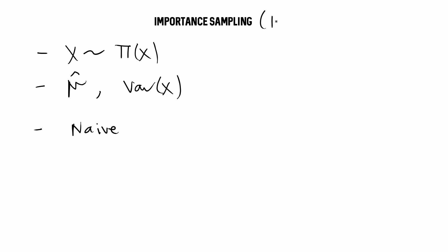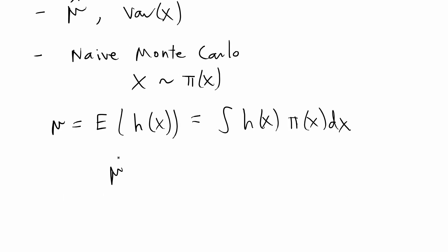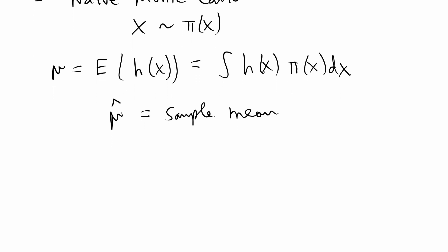Importance sampling, sometimes abbreviated IS, is a simple extension of the idea of naive Monte Carlo. The idea with naive Monte Carlo is that x, your random variable, is distributed pi(x) where pi(x) is some target distribution. If you wanted to estimate the expected value of h(x), which is the mean, with naive Monte Carlo we know this equals the integral of h(x) times pi(x) dx. You can estimate mu by getting the sample mean from Monte Carlo resampling, and also find the standard error or an estimate of the variance.